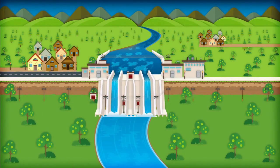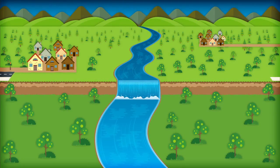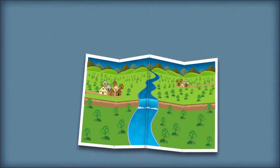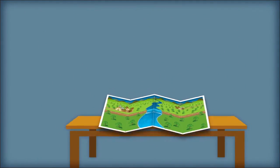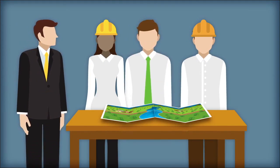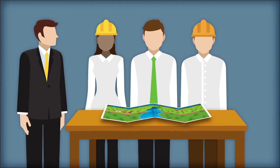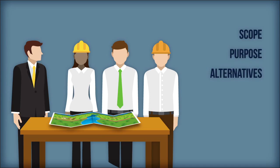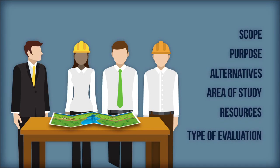The scoping phase should take place at the beginning of the EIA process and, ideally, include the participation of the reviewer. The participation of reviewers in this phase shapes the EIA process, including the scope, purpose, alternatives, area of study, resources, and the type of assessment.